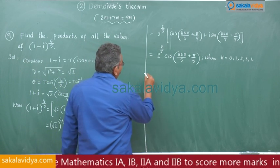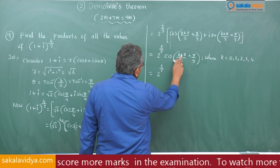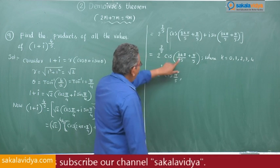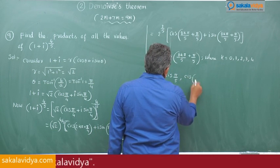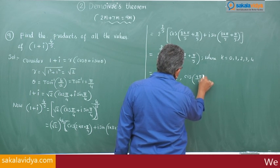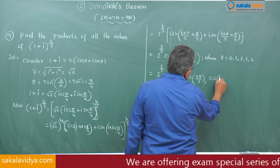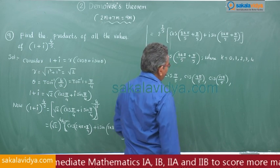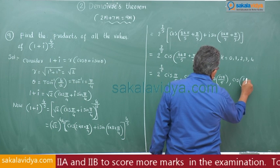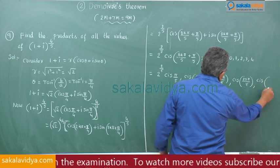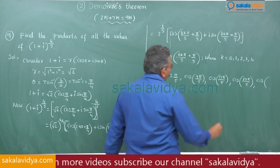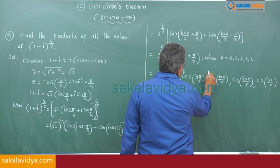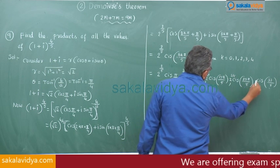Therefore, we get different values. Put k = 0: we get cis(π/5). Put k = 1: we get cis(9π/5). Put k = 2: we get cis(17π/5). Put k = 3: we get cis(25π/5). Put k = 4: we get cis(33π/5). Each multiplied by 2 to the power of 2 by 5.